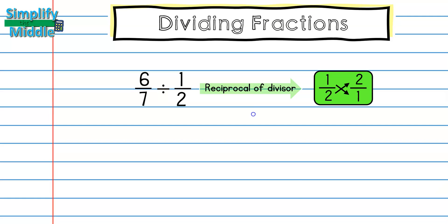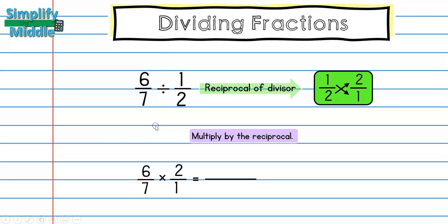Now let's multiply by the reciprocal. The first number never changes because that's how much I started with, so I rewrite 6/7 and multiply it by 2/1. My numerator becomes 6 times 2 and my denominator is 7 times 1. I don't see any common factors, so I multiply straight across: 6 times 2 is 12 and 7 times 1 is 7.